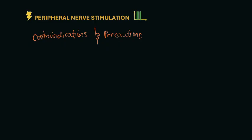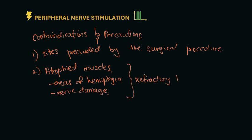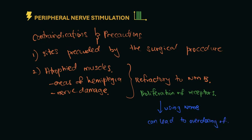Be cautious that there are also contraindications and precautions in peripheral nerve stimulation. First and foremost, make sure that the nerve stimulation is not part of the surgical procedure. Caution also needs to be exercised in atrophic muscles, which can be due to areas of hemiplegia or nerve damage, where these muscle groups are refractory to neuromuscular blocking agents. Why? Because of the proliferation of receptors. The use of neuromuscular blocking agents can lead to overdosing of competitive neuromuscular blocking agents.